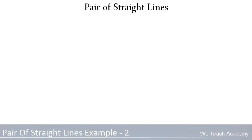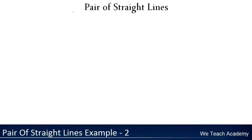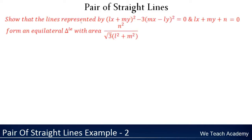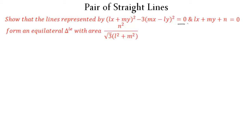Hello guys, welcome back to Vedish Academy. Now let us discuss an example under the concept of pair of straight lines. We need to show that the lines represented by the pair of straight lines form an equilateral triangle with area N² divided by (√3 × (L² + M²)). Let us name the pair of straight lines as equation 1 and the next line as equation 2.